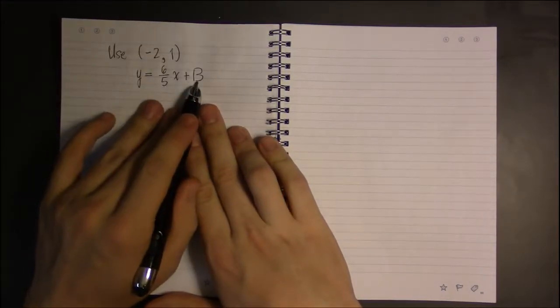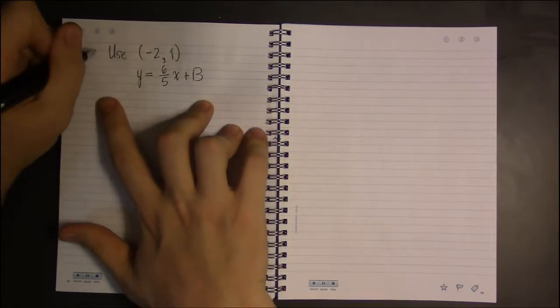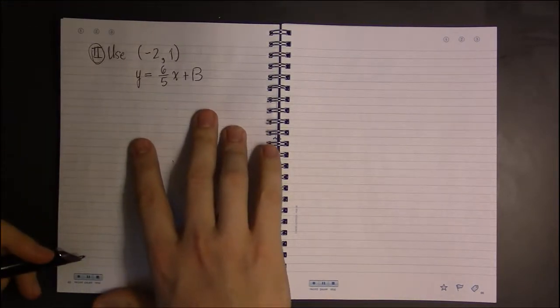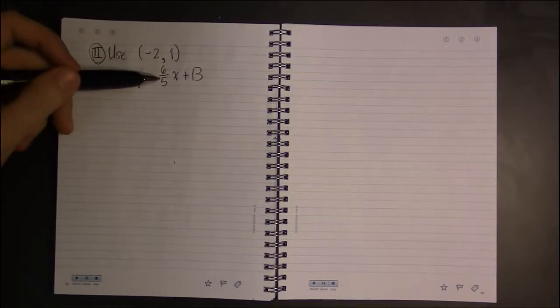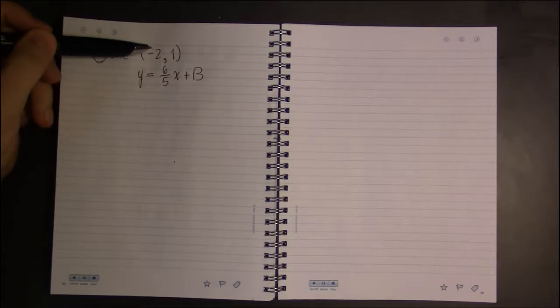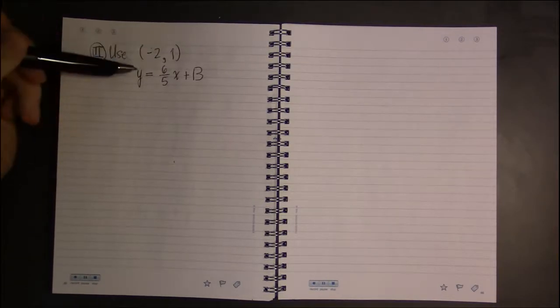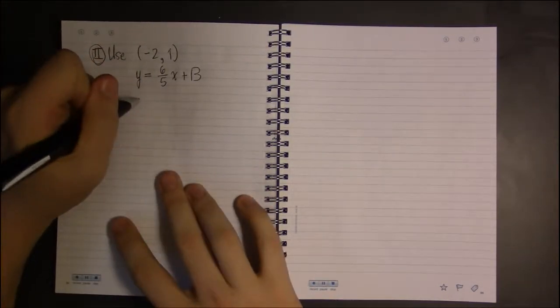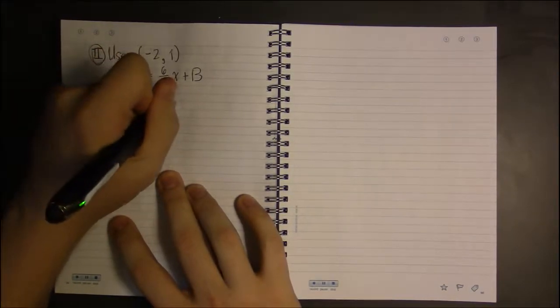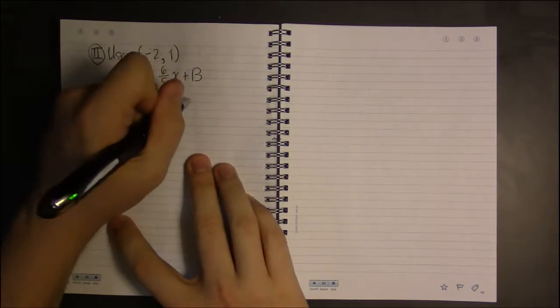We know m, we're still trying to find b in this method 2. So, we're pretending we didn't do that previous page. We just found the slope. We're trying to find the y-intercept. So, we plug -2 in for x, 1 in for y, and see what that can tell us about b.